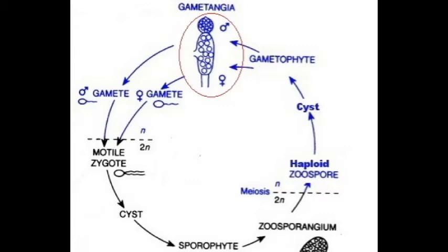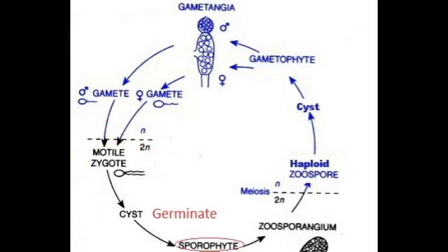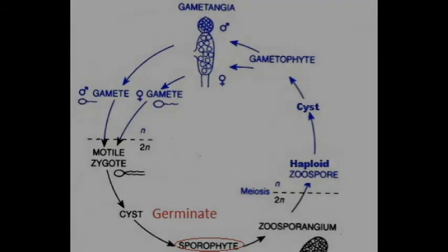As the chytrid in the gametophyte phase matures, it creates gametangia (singular: gametangium). The gametangia contain male or female gametes, which are released through an opening in the gametangia. Male and female gametes fuse to form a motile zygote. The zygote searches for a suitable habitat and begins to germinate, once again entering the sporophyte phase, thus completing the sexual reproductive cycle.